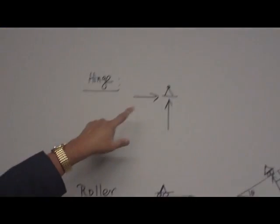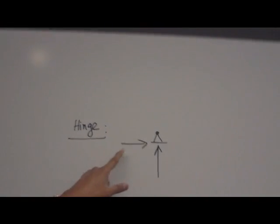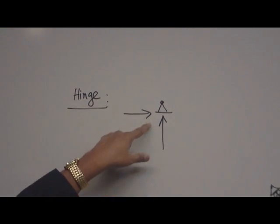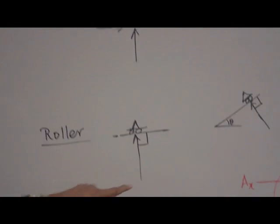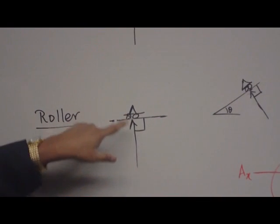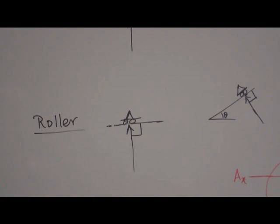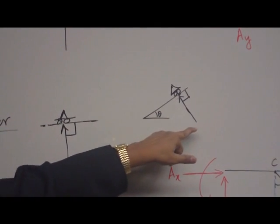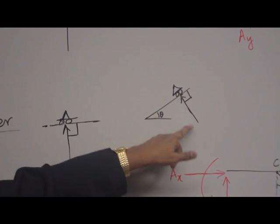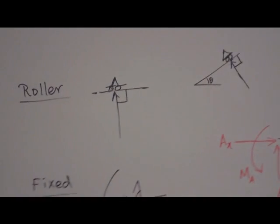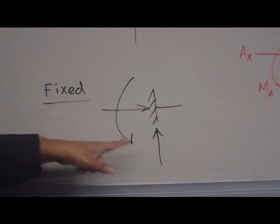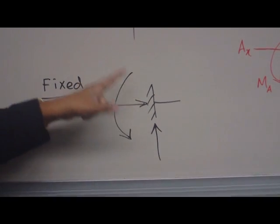At the hinge, you have two hidden force, which is reactive force, horizontal reaction and vertical reaction. In the roller, you have only vertical reaction, normal to the plane of the roller. If the roller is sitting on an inclined plane, then your reaction is normal to that inclined plane. If it is a fixed support, you have three reactions, one horizontal, one vertical and one moment.